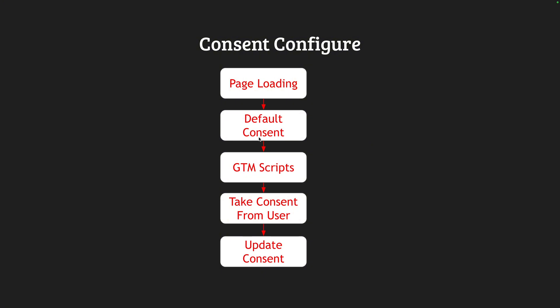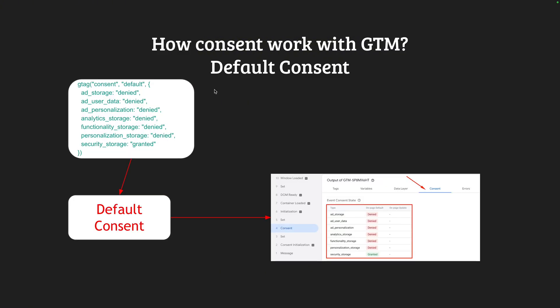How we can do that? When the page is loading, we need to set up a default consent so that we can tell our Google Tag Manager that the consent is set up. Then the Google Tag Manager script should run. Finally, we can take the consent from our visitor and update the consent with the given visitor consent information. If we check this thing step by step, at the beginning stage we actually use this type of code.